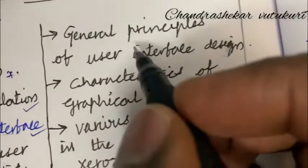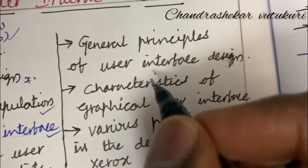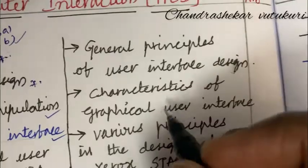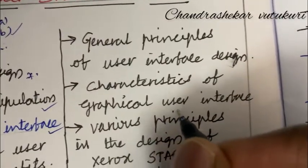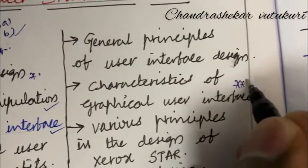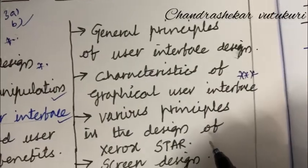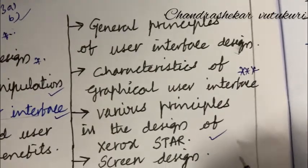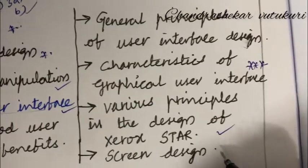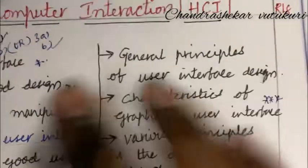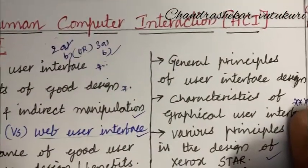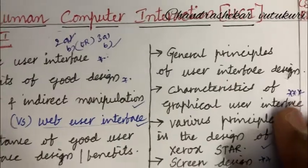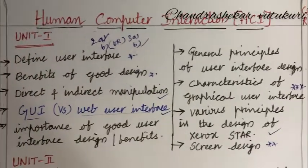Let's look at 3AB. The general principles of user interface design, explain, as well as explain the characteristics of graphical user interface is one of the topmost and gunshot questions. Various parameters in the design of Xerox star is also a very important question. Explain the screen design may be one of the short questions. This is question number 2AB as well as 3AB as well as 1AB. Do not skip any part.